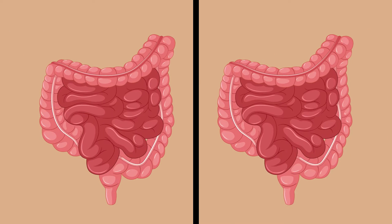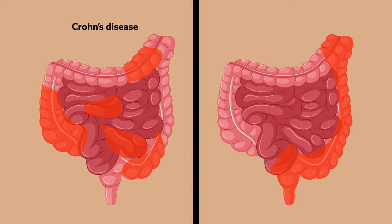IBD is an autoimmune disease characterized by inflammation of the gastrointestinal tract and comes in two common forms, Crohn's disease and ulcerative colitis. Patients usually suffer from abdominal pain and diarrhea. In severe cases, people can't absorb enough nutrients, and the condition becomes life-threatening.